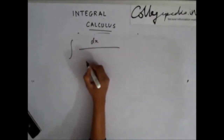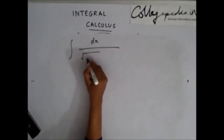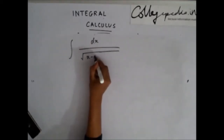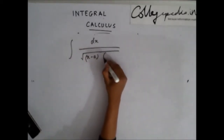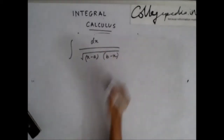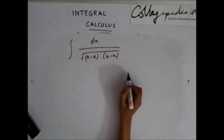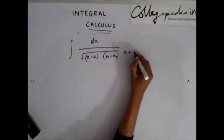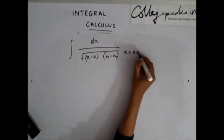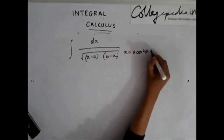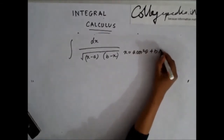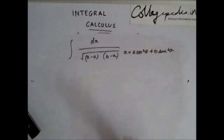Now let's look at a problem using these substitutions. Say you are asked to integrate dx / [(x - a)(b - x)]. As discussed, when you get a term like this, a good substitution is x = a cos²θ + b sin²θ.